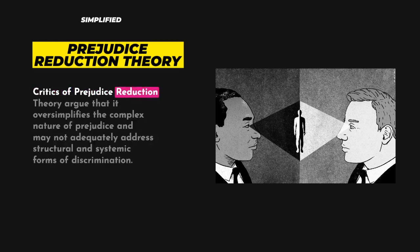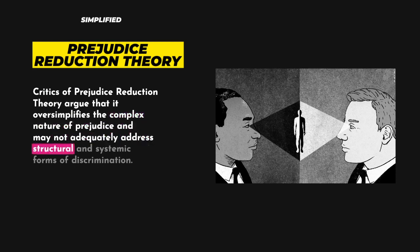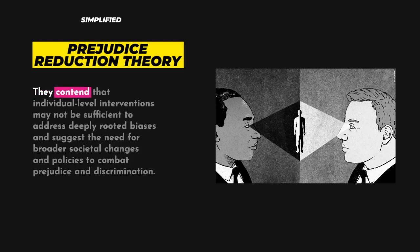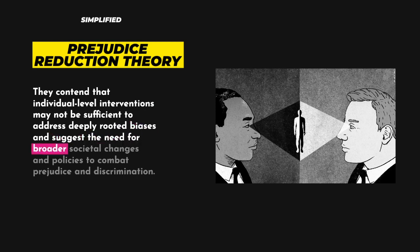Critics of Prejudice Reduction Theory argue that it oversimplifies the complex nature of prejudice and may not adequately address structural and systemic forms of discrimination. They contend that individual-level interventions may not be sufficient to address deeply rooted biases, and suggest the need for broader societal changes and policies to combat prejudice and discrimination.